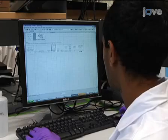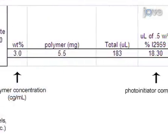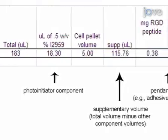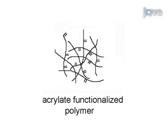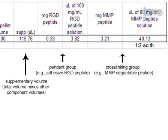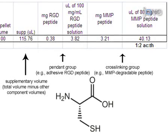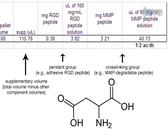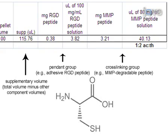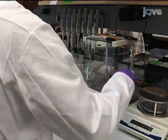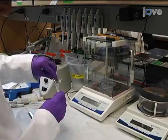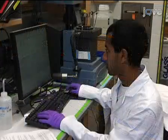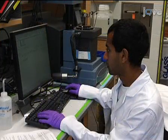Next, use a spreadsheet program such as Microsoft Excel to calculate the amount of polymer and crosslinker needed. Demonstrated here is hyaluronic acid functionalized with acrylate reactive groups. Also calculate the amount of the pendant peptide containing the functional adhesive domain with amino acid cysteine, arginine, glycine, and aspartate. The cysteine is for tethering to the polymer. Weigh out the required amounts and place each in an Eppendorf tube, adjusting the spreadsheet for the actual mass of polymer obtained.